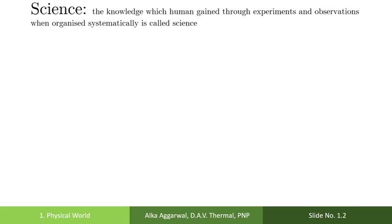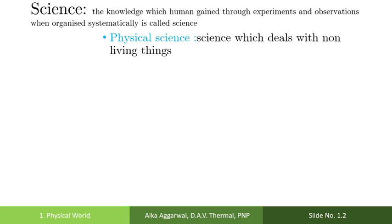There are two types of sciences: the physical science and the biological science. The physical science is a science which deals with non-living things.